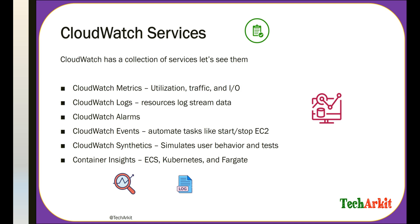CloudWatch Events can automate tasks like starting and stopping EC2 instances. For example, during festivals or special occasions when traffic increases, a CloudWatch Event can detect that CPU utilization is going above 90% and trigger an Auto Scaling action to bring up additional EC2 instances. Conversely, when utilization is low, it can scale in to reduce resources — allowing you to scale out and scale in as needed.